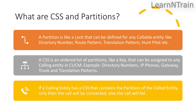What are CSS and partitions? A partition is like a lock that can be defined for any callable entity, like directory number, route pattern, translation pattern, hunt pilot, etc. A CSS is an ordered list of partitions, like a key, that can be assigned to any calling entity in CUCM — for example, directory numbers, IP phones, gateway, trunk, and translation patterns. If a calling entity has a CSS that contains the partition of the called entity, only then the call will be connected, else the call will fail.